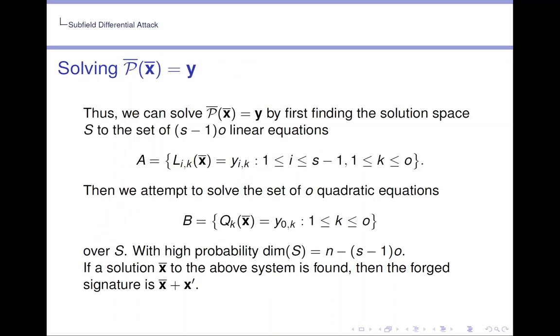Thus we can solve P̄ equals y by first finding the solution space S to the set of (s minus 1) times o linear equations, A equals L_{i,k}(x̄) equals y_{i,k}. Now we have (s minus 1) times o linear equations because we have s minus 1 powers of T, now T to the power of 1 up to T to the power of s minus 1 to solve, and we have o polynomials in P̄ to do this with. Then we attempt to solve the set of o quadratic equations, B equals Q_k equals y_{0,k} over S. With high probability the dimension of S is equal to n minus (s minus 1) times o. If a solution x̄ to the above system is found, then the forged signature is x̄ plus x'.